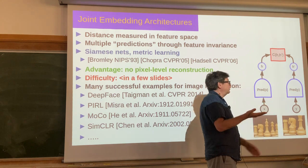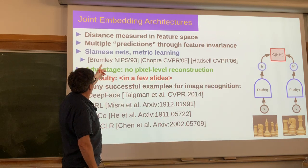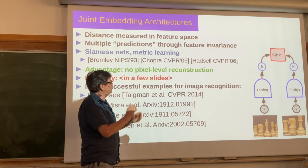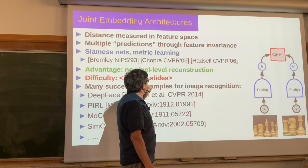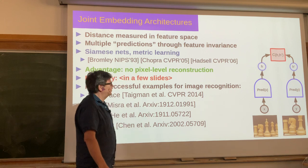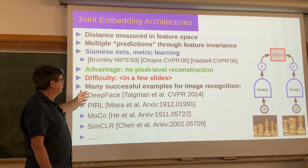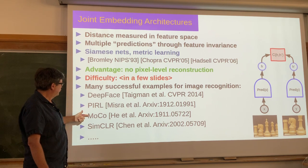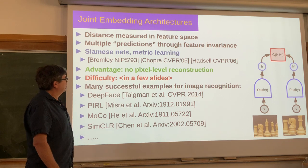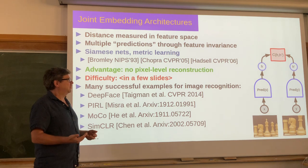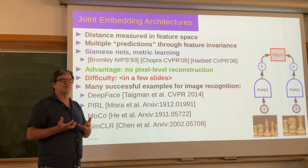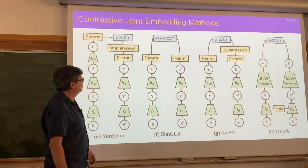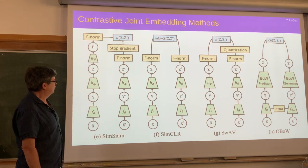To prevent collapse, contrastive methods use pairs of similar and dissimilar images. Contrastive work dates back to the early 1990s for signature verification, with more recent work from around 2014 and especially 2019. Systems like SimCLR (Google Brain), SimSiam, SWAV, and BYOL (from FAIR) have been shown to work really well for pre-training image recognition systems from essentially unlabeled images, all differing in various technical details.